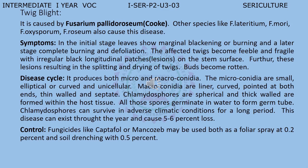Coming to the disease cycle of twig blight: it produces both micro and macroconidia. The microconidia are small, elliptical, curved and unicellular. Macroconidia are linear, curved, with both ends thin-walled and septate. Chlamydospores are spherical and thick-walled, formed within the host tissue. All spores germinate in water to form a germ tube. Chlamydospores can survive in adverse climatic conditions for a long period. This disease can exist throughout the year and cause a crop loss of about 5 to 6 percent.